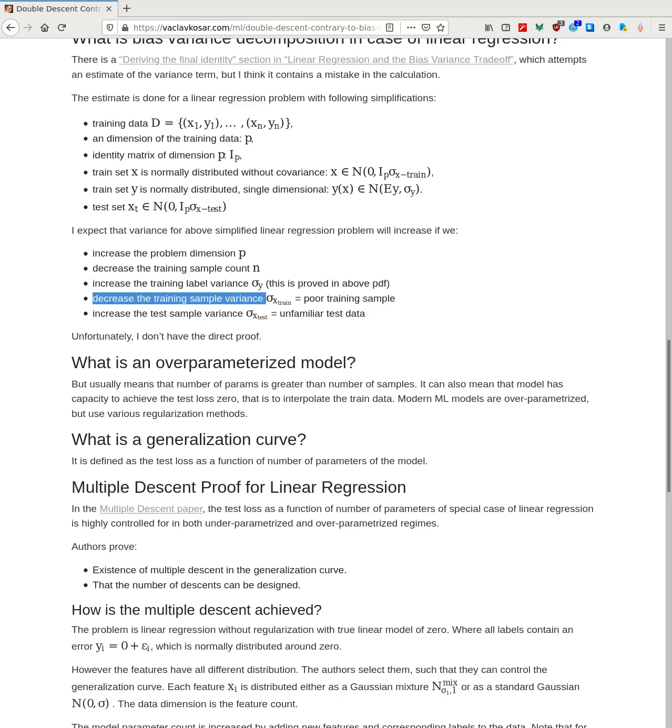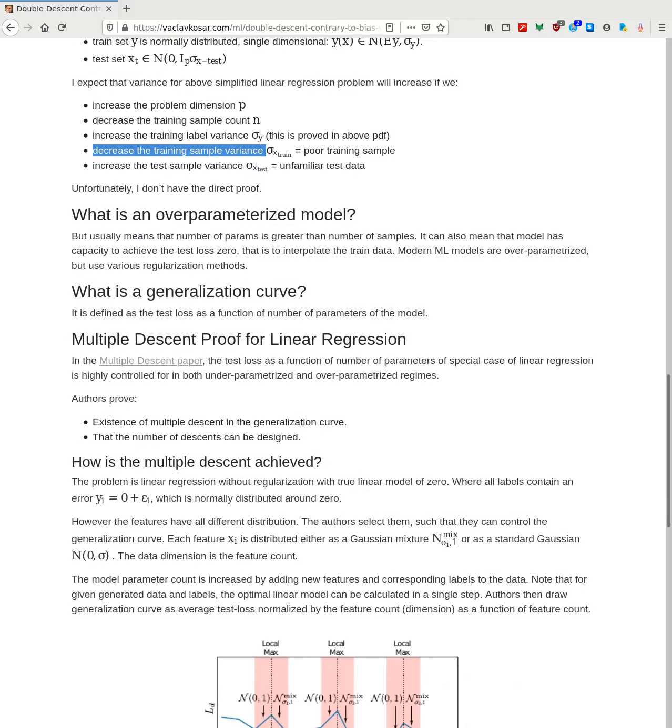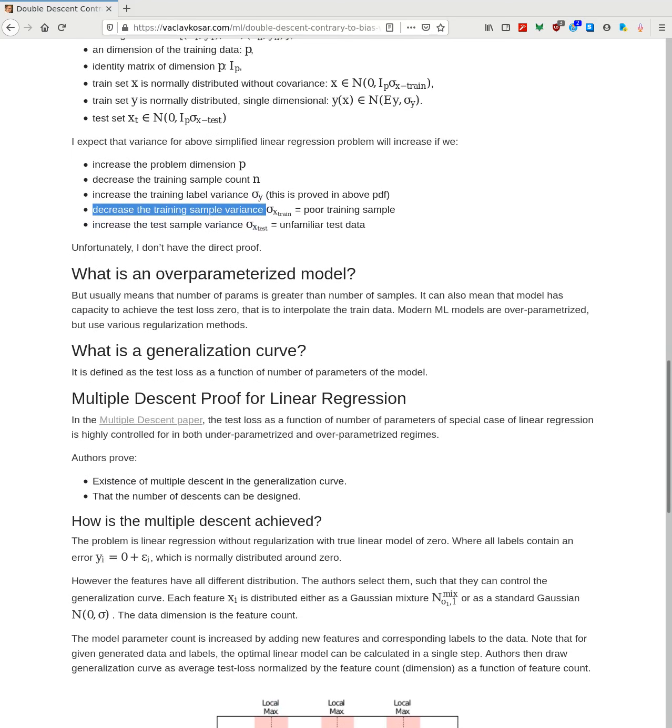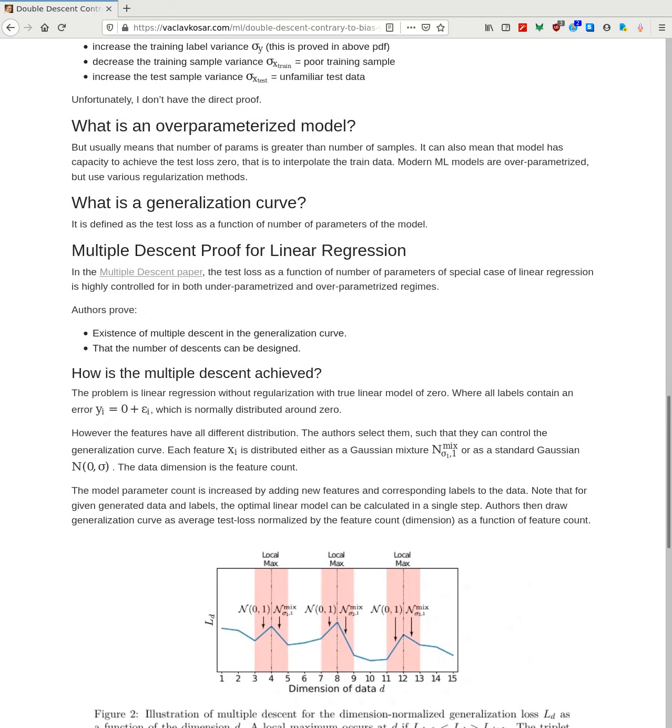And why is that? Well, that is because if you give richer training sample, the model should be able to generalize better. And if we, at the same time increase the variance, well actually, if we increase the, on the other hand, test sample variance, we are effectively exposing the model to the unfamiliar test data. So this should increase the variance.